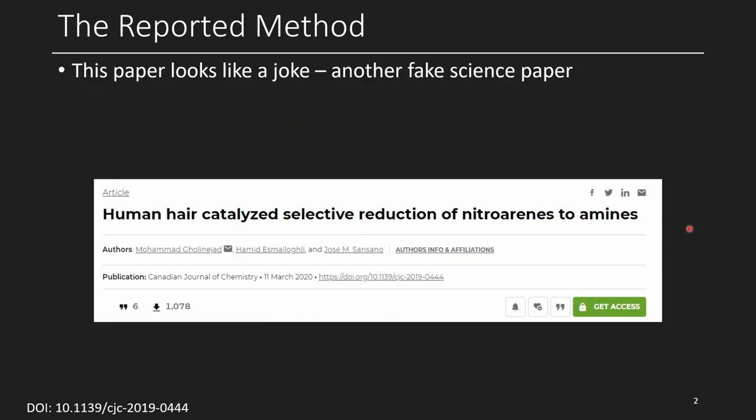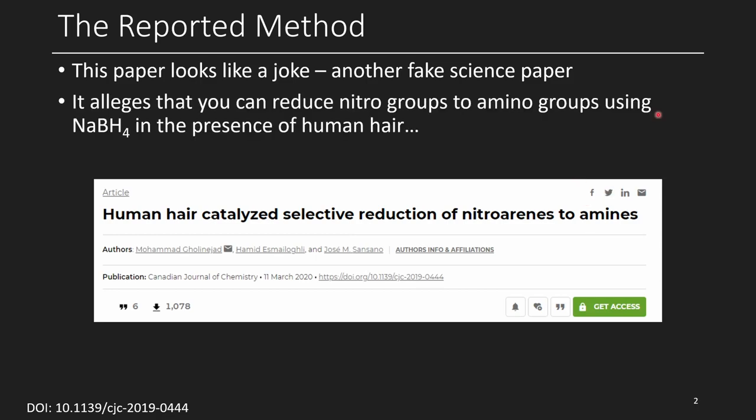The paper we're looking at today was suggested by somebody in the Discord and recommended a few times. This paper claims you can use human hair to catalyze the selective reduction of nitroarenes to amines. Starting with a nitro group, we get an amine. What this paper claims is that you can reduce nitro groups to amino groups using sodium borohydride with human hair as a catalyst, although the catalyst loading is fairly high.